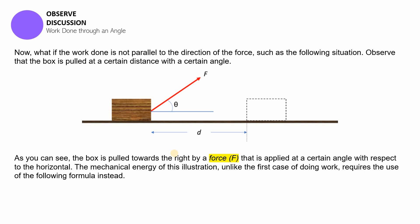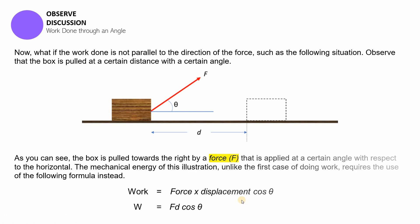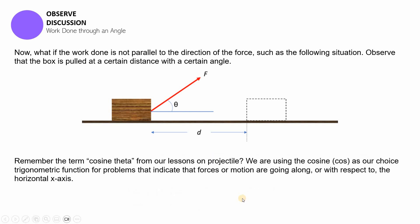The mechanical energy of this illustration, unlike the first case of doing work which was parallel, requires the use of the following formula instead, which is work is equal to force times displacement, which is basically the same formula we had in the previous video lesson. And this time, we're going to be using cosine theta. So cosine theta is a term that we are quite familiar with, right?